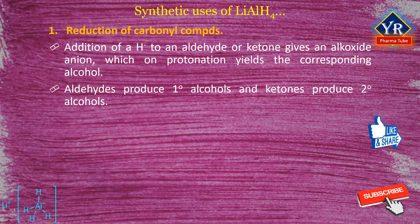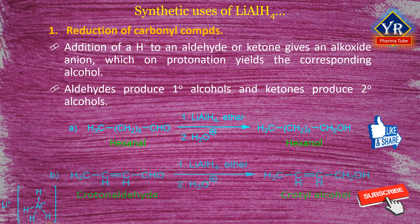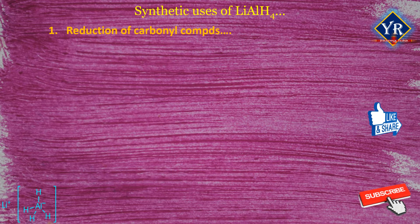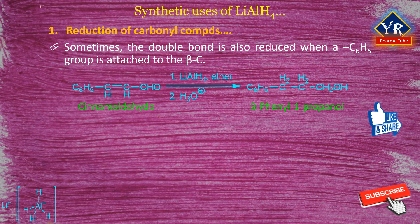Aldehydes produce primary alcohols and ketones produce secondary alcohols. For example, hexanol and crotonaldehyde are converted to hexanol and crotyl alcohol respectively, where the aldehyde group is converted into the respective alcoholic groups. Note that the carbonyl compounds are reduced without affecting double or triple bonds. Sometimes the double bond is also reduced when a phenyl group is attached to the beta carbon. For example, cinnamaldehyde produces 3-phenyl-1-propanol by the action of lithium aluminium hydride followed by protonation.